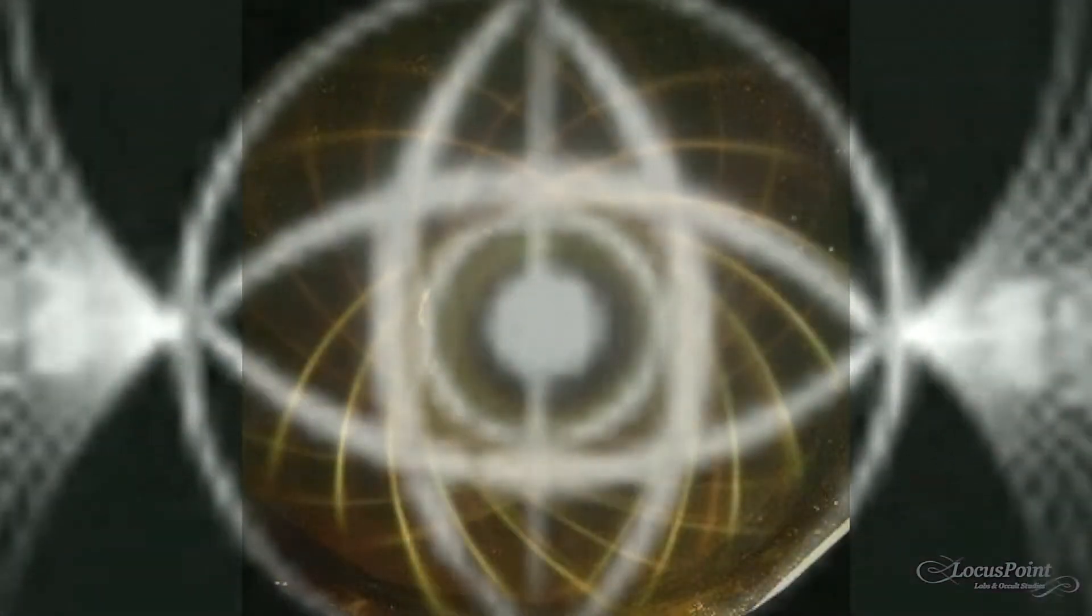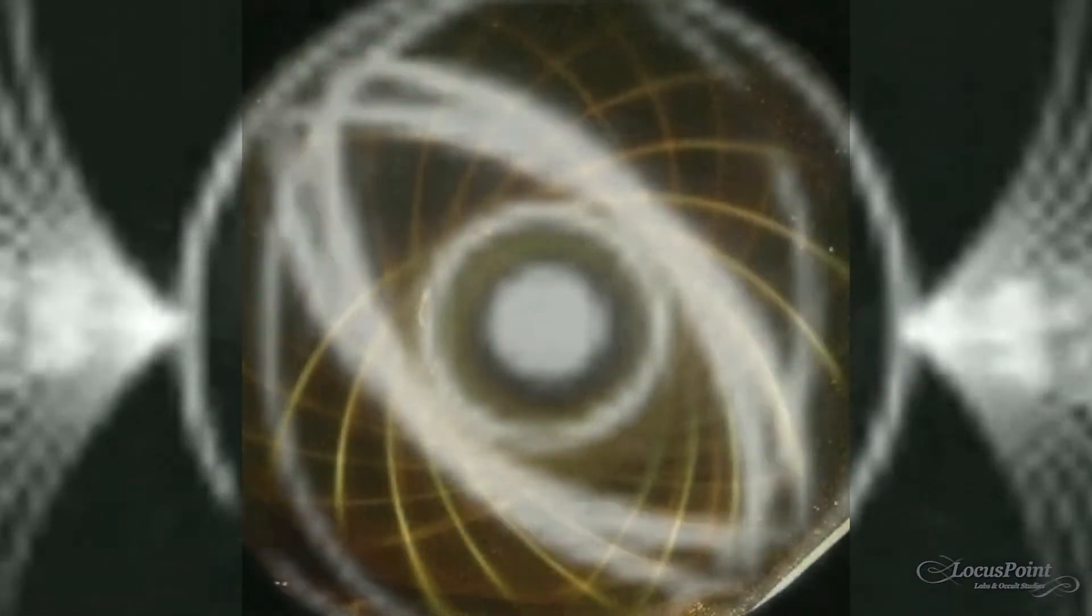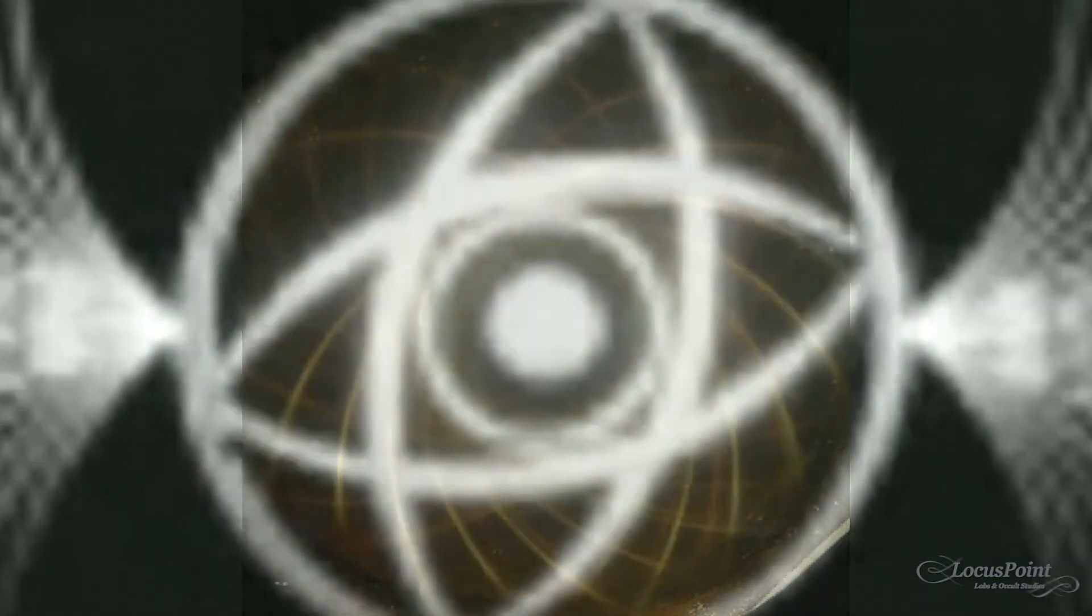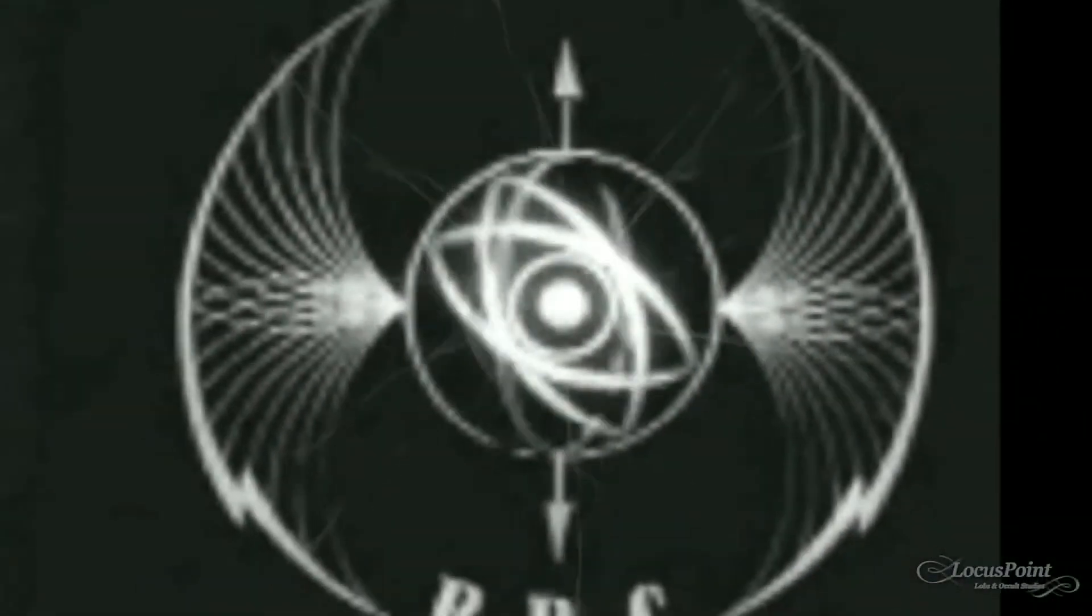Light consists of extremely fast oscillations, an electromagnetic field. A sphere within a sphere can create electrical tension and subsequently a frequency.